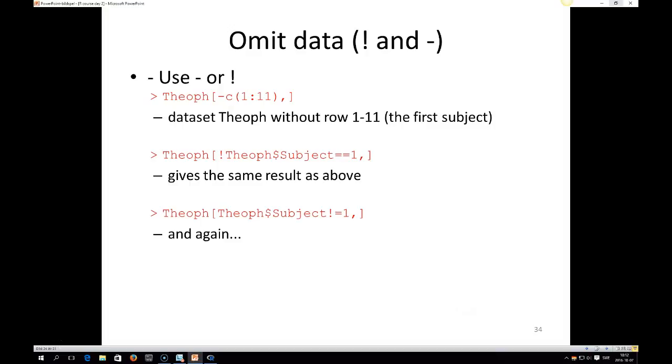and then C 1 colon 11, you tell R that you want all the rows except from row 1 to 11, and then you want all the columns. You could have written this in some other ways, like in the